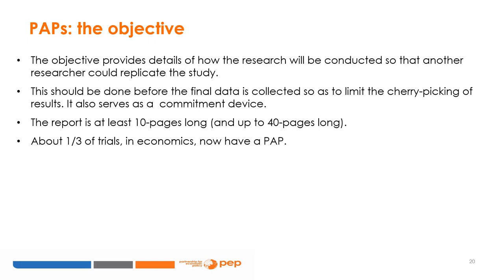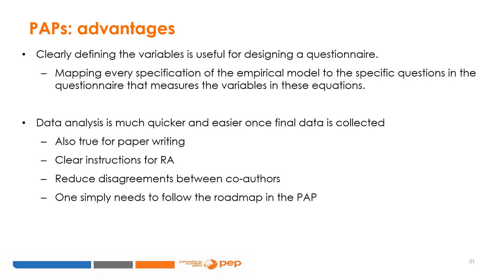Compared to a study registry, PAPs are more elaborate documents with more information. The objective of PAPs is to provide details on how the research will be conducted so that another researcher could replicate the study. PAPs should be written before final data collection — they can then work as a commitment device. PAPs have the structure of a report and are at least 10 pages long and up to 40 pages long. About one-third of trials in economics now have a PAP.